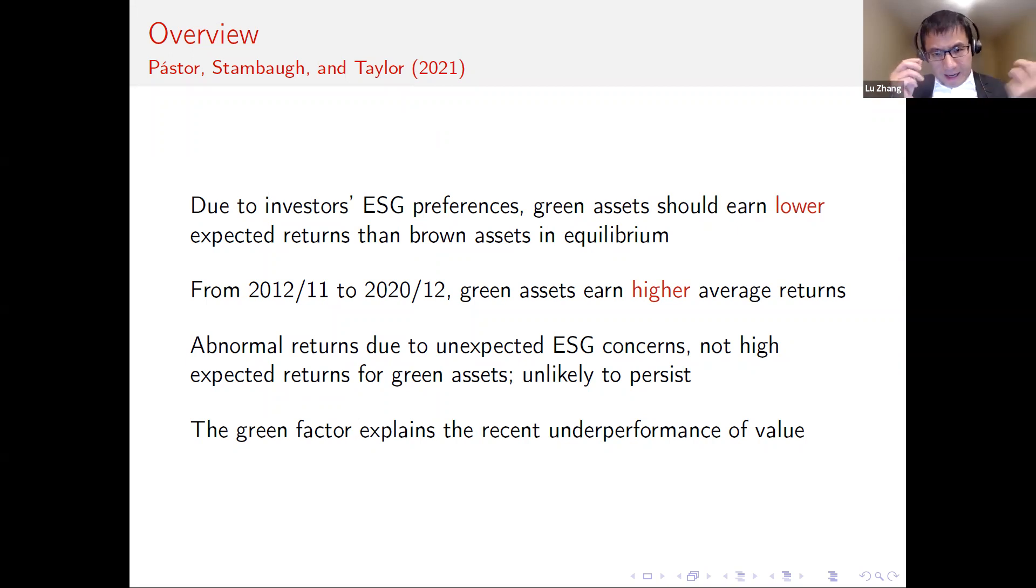The authors attribute the difference between average realized returns and expected stock returns to abnormal returns. The abnormal returns can arise from unexpected preference shifts in favor of ESG, and abnormal returns are not due to higher expected return for green assets. As such, the average abnormal returns are unlikely to persist, as argued in the paper.